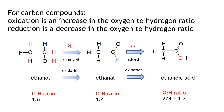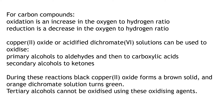We can say that oxidation is an increase in the oxygen-to-hydrogen ratio, and reduction is the opposite — a decrease in the oxygen-to-hydrogen ratio. Copper II oxide or acidified dichromate can be used to oxidise primary alcohols to aldehydes and then to carboxylic acids, and secondary alcohols to ketones. The visual changes to know: black copper II oxide forms a brown solid, and orange dichromate solution turns green. Tertiary alcohols cannot be oxidised using these oxidising agents.